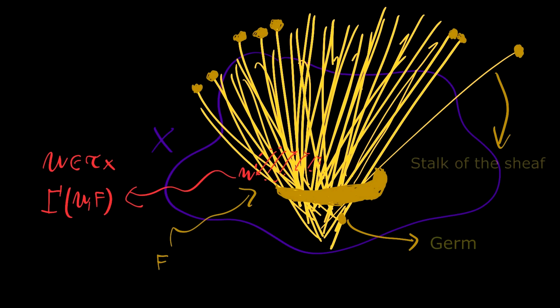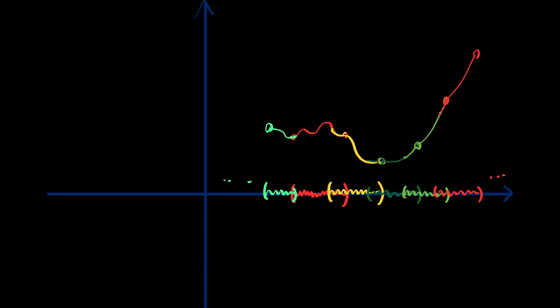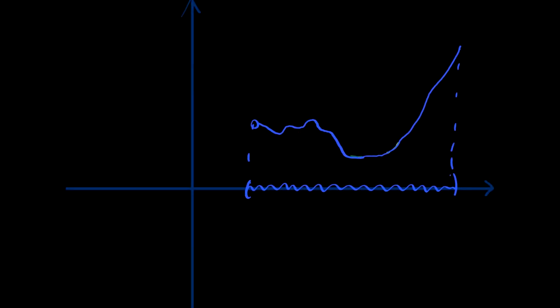The stalks encapsulate the local behavior of the sheaf at a point, and in the case of the sheaf of holomorphic functions, they are formed by all the germs of functions at that point. A sheaf allows us to study global properties by studying local properties, thanks to the gluing and locality axioms they satisfy — meaning that given a cover of open sets with data that agrees on intersections, we can obtain global data by combining all the local data together.